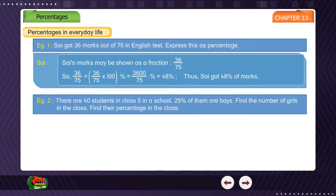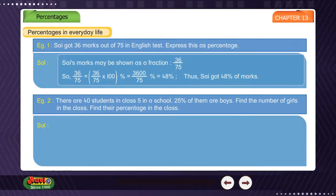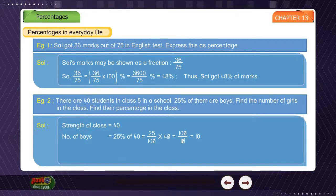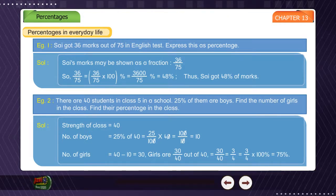Example 2: There are 40 students in class 5. 25% of them are boys. Find the number of girls and their percentage. Solution: Strength of class = 40. Number of boys = 25% of 40 = (25/100) × 40 = 10. Number of girls = 40 − 10 = 30. Girls as percentage = (30/40) × 100% = 75%.